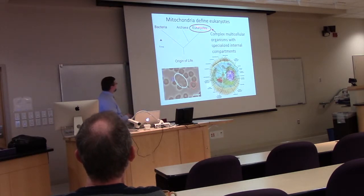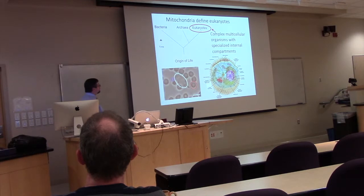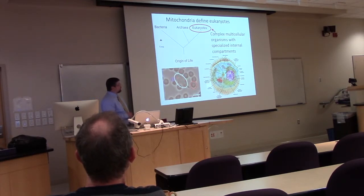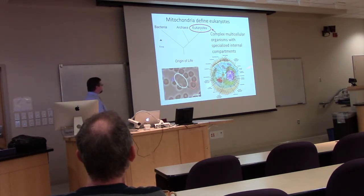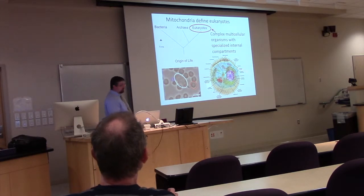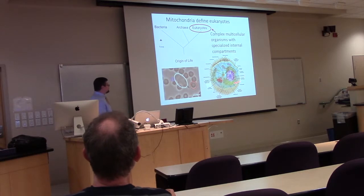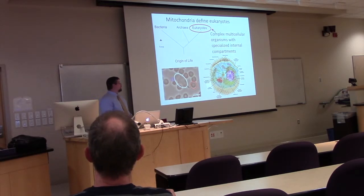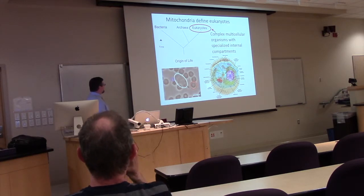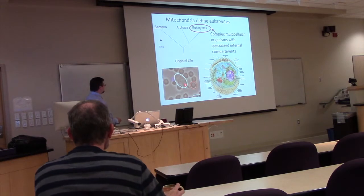Whereas eukaryotes can be quite large, they're also very complex and comprise multicellular organisms such as us. They have many membrane-bound compartments in their cells with specialized functions, including the nucleus — the hallmark of eukaryotes — which separates its genetic material from the rest of the cell. Not only is it much more complex than prokaryotes, but size-wise it's much bigger.